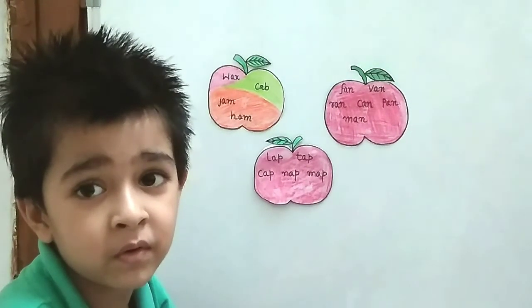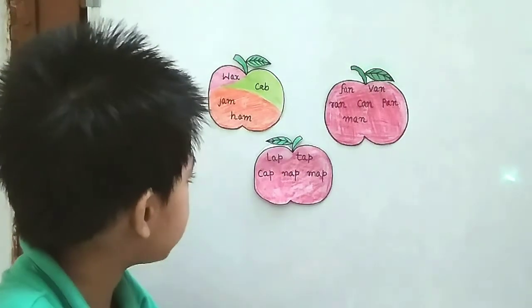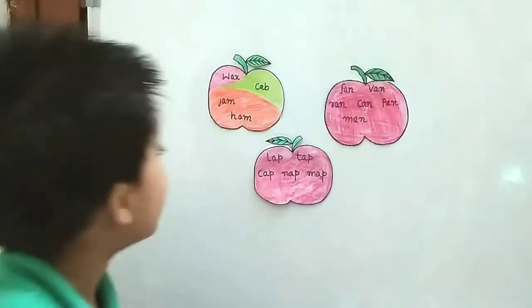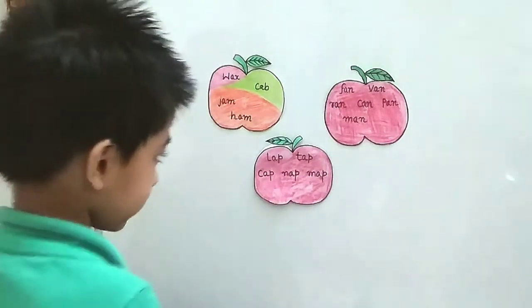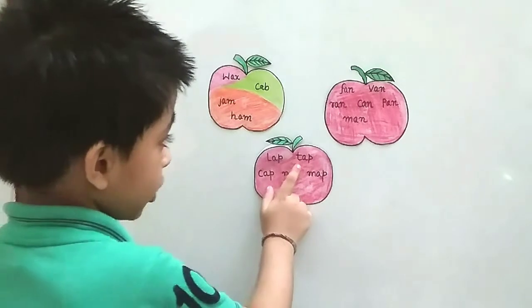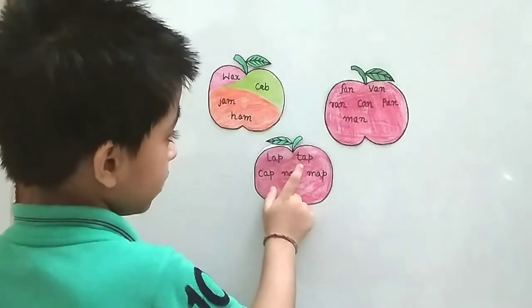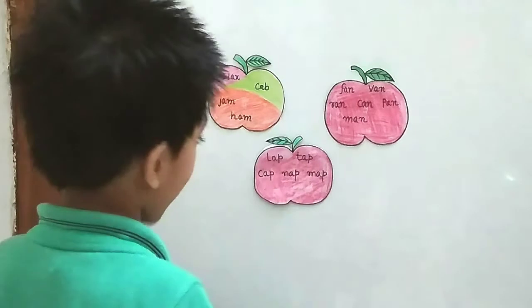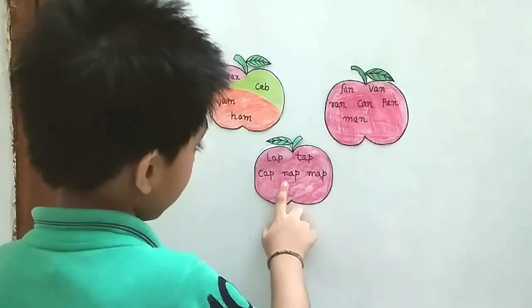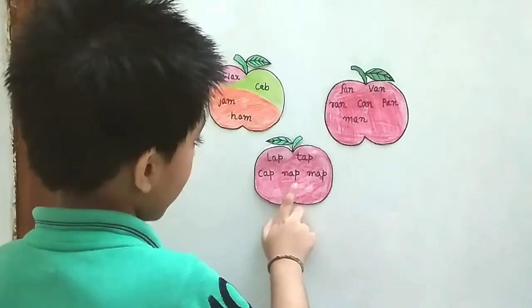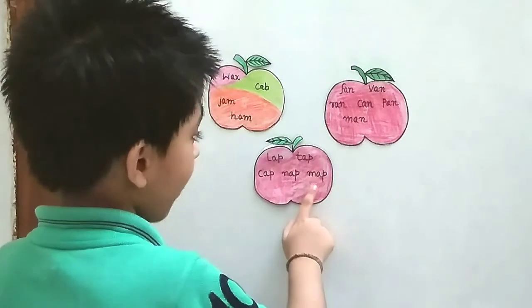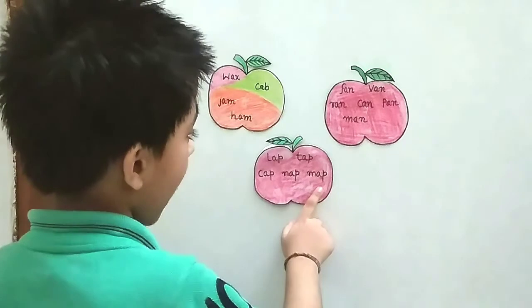Now, which apple do you want to take? I want this apple. So read all the words written on that apple. Okay. L-A-B, lab. T-A-P, tap. C-A-P, cap. M-A-P, map.